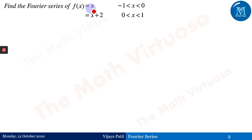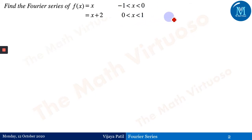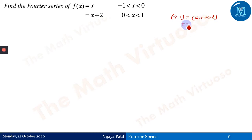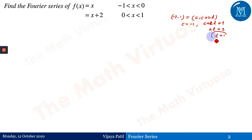Find the Fourier series of f(x), where f(x) equals x from minus 1 to 0, and f(x) equals x minus x plus 2 in the interval 0 to 1. If you observe, this interval is from minus 1 to 1. Comparing with the standard interval c to c plus 2l, we get c equals minus 1 and c plus 2l equals 1. Since c is minus 1, 2l becomes 2, and therefore l equals 1.